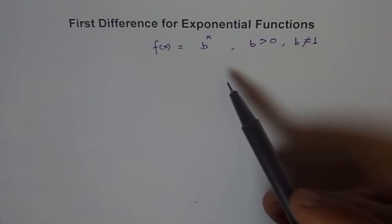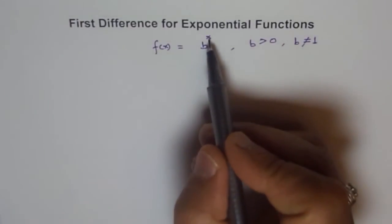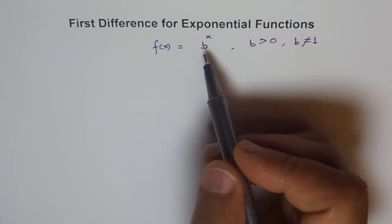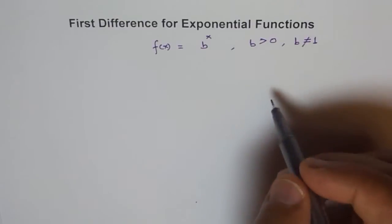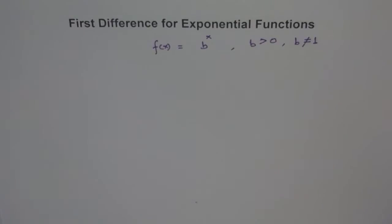What about b = 0 or less? If b = 0, then 0 to the power of anything is 0, so it becomes a constant function. And if b is a negative value, the function is not continuous — for even exponents you get positive values, and for odd exponents you get negative values. So the graph flips positive, negative, positive, negative, and is not continuous. That is also not considered an exponential function.